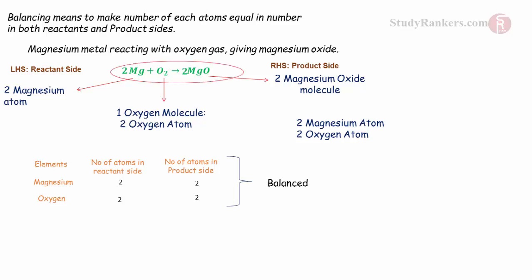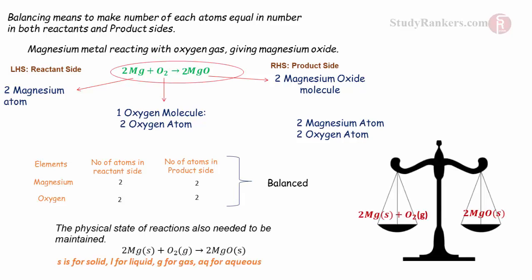In a chemical equation, information regarding physical state is also added. In order to balance a chemical equation, we need to start with atoms that are maximum in number. Remember, balancing an equation means balancing the number of atoms. We use S for solid, L for liquid, G for gas, and Aq for aqueous to indicate the physical state.